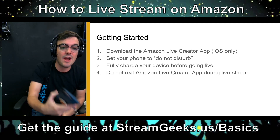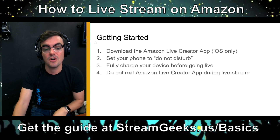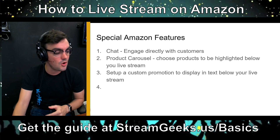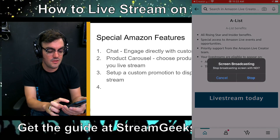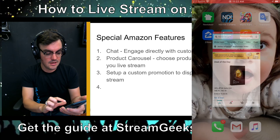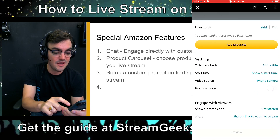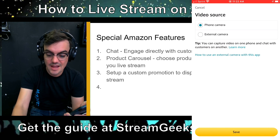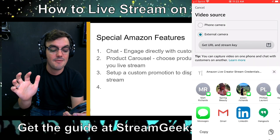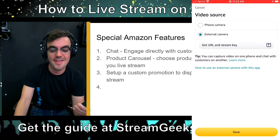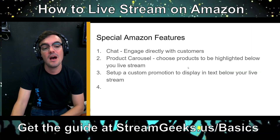If you're getting started, you need the Amazon Live Creator app — it's only available for iOS, which is a bummer if you're on Android. Set up your phone for Do Not Disturb, charge your phone, and don't leave the creator app until the live stream is over. In the app, go to starting a live stream, click the video source area, and set it to external camera. That will give you your URL and stream key — you can message it to yourself — and that's how you connect OBS, Wirecast, or vmix into Amazon's live streaming setup.